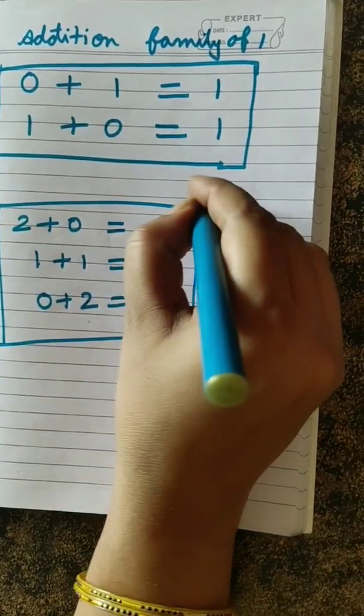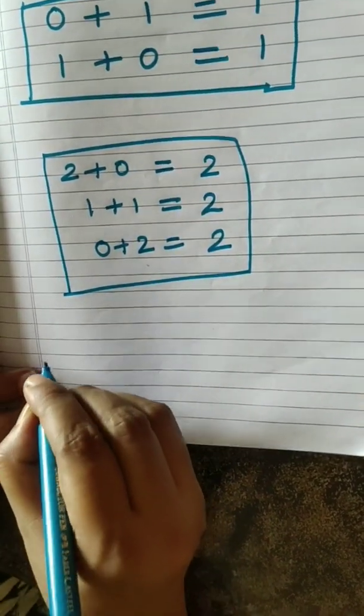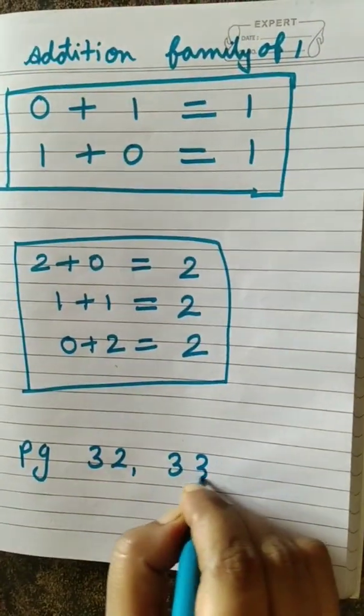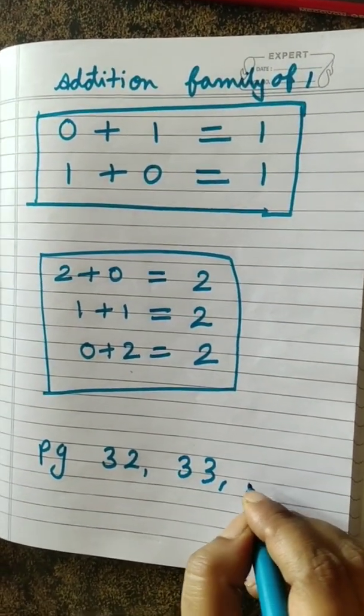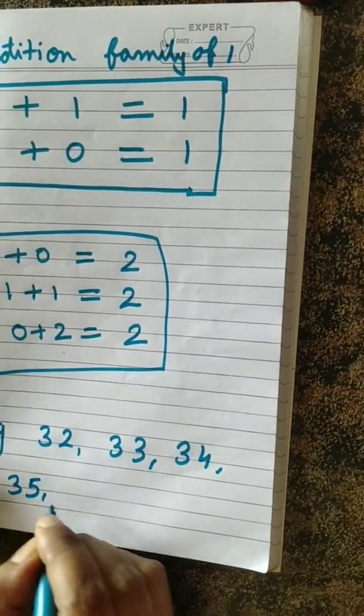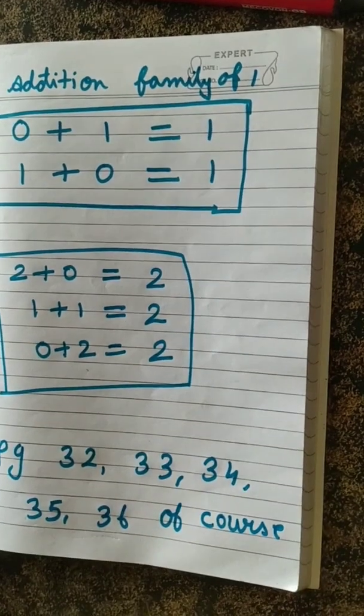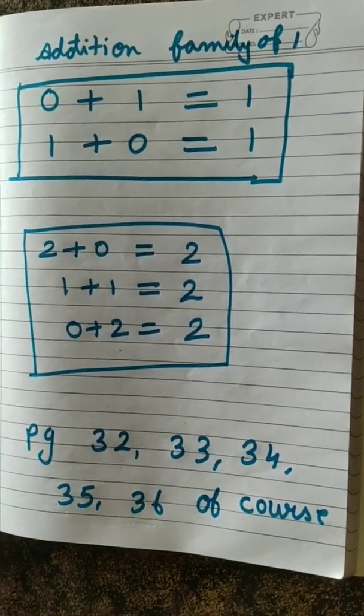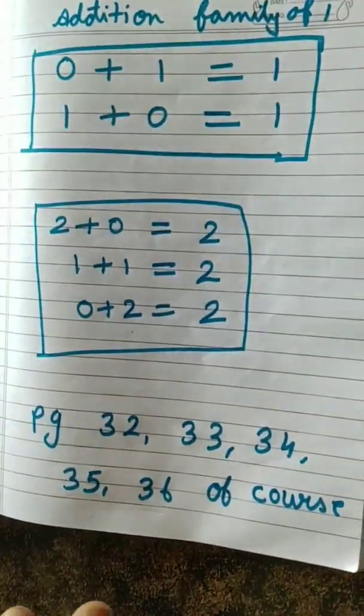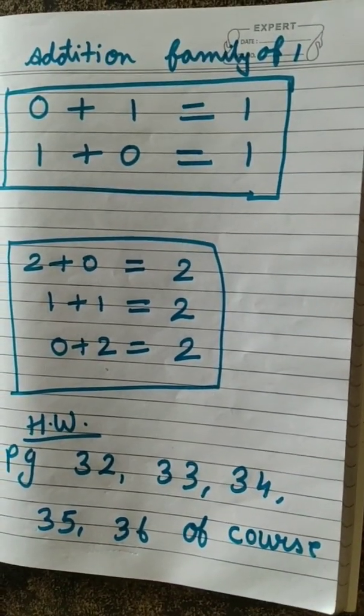This is addition family of 1. This is addition family of 2. And this addition family, you are going to do on the page number 32, 33, 34, 35, and 36 of your course book. Course book means the thick book. Got it children? Yes. You are going to do all these things in your course book. Okay children. This is your homework. This is your homework. Bye children.